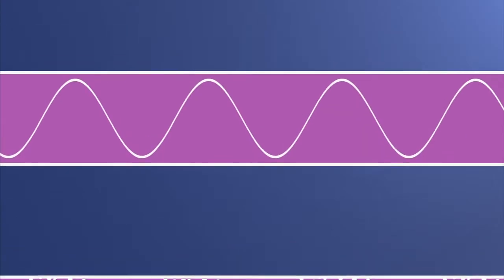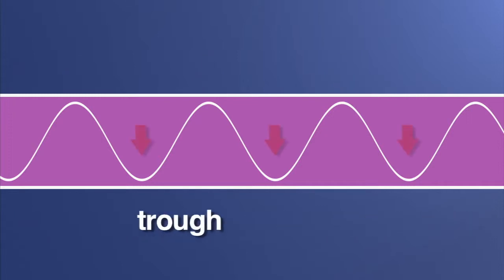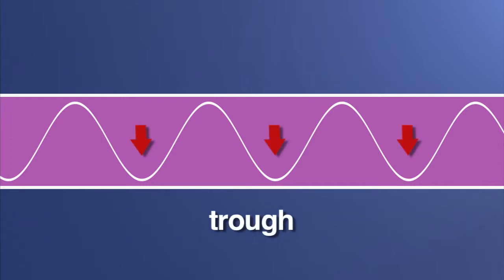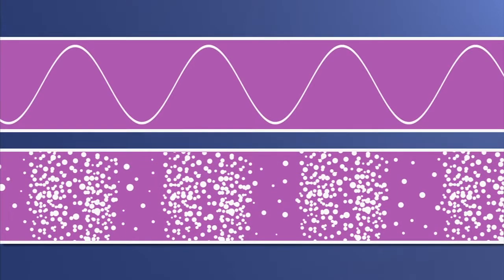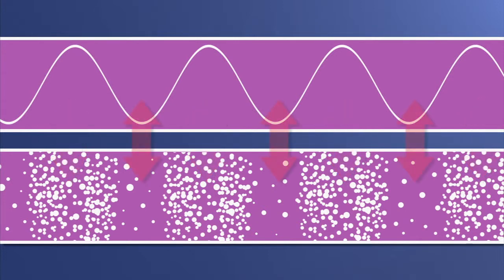But sound waves can also be represented like this. Notice how the wave goes up and down with high points called crests and low points called troughs. The crests represent compressions and the troughs rarefactions.